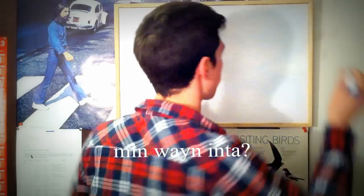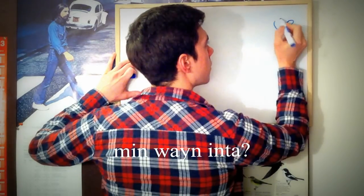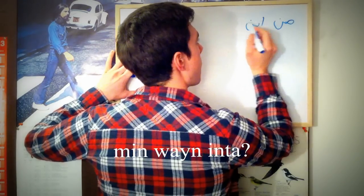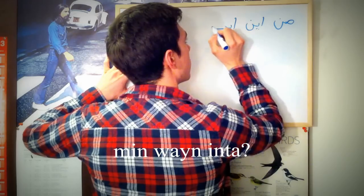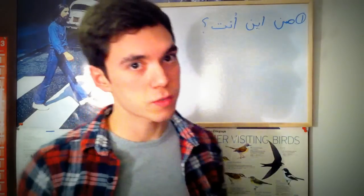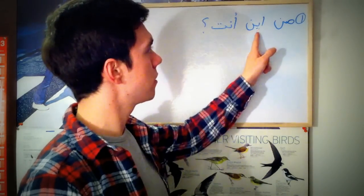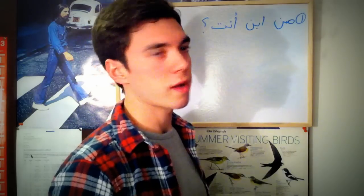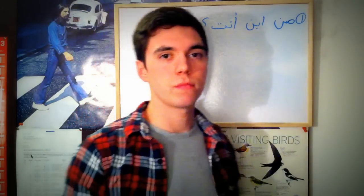The first thing I'm going to teach you — listen — is: min-wein-inter. I'll write it down. Min-wein-inter, number one. Can you guess what that means? I bet you can. 'Min' means 'from', 'wein' means 'where', 'inter' means 'you are'. So min-wein-inter means: where are you from?